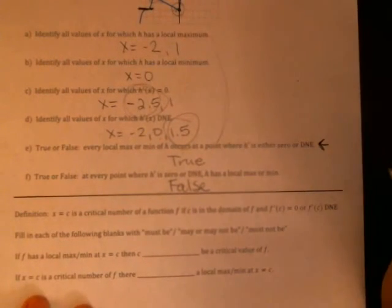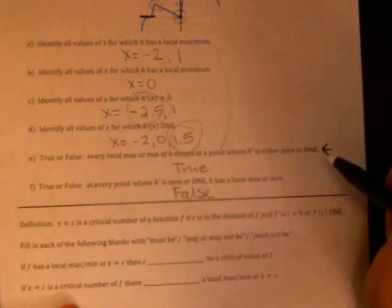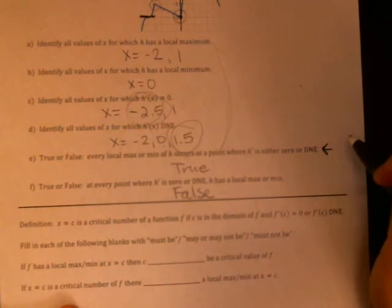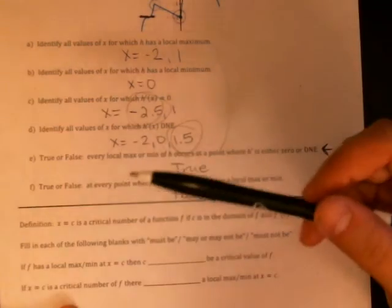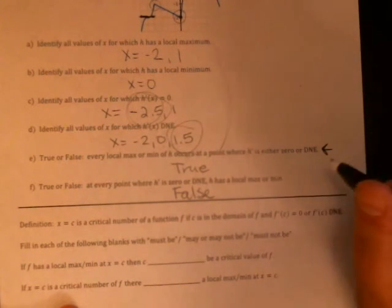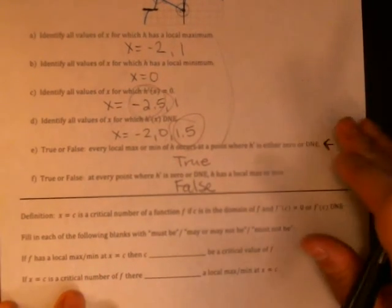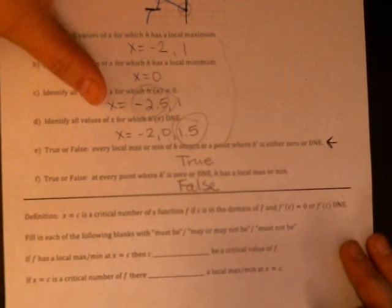So this is exactly what we identified as important up here. All of our maxes and mins happen when our derivative was zero or undefined, so we're going to name those points critical numbers, those x values. Okay so again if your derivative is zero or undefined then that x coordinate is a critical value.